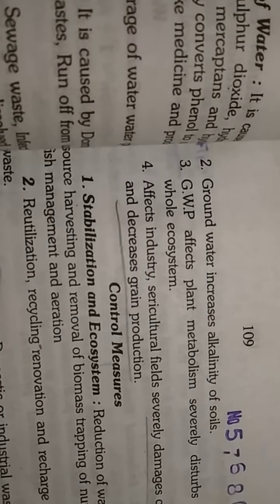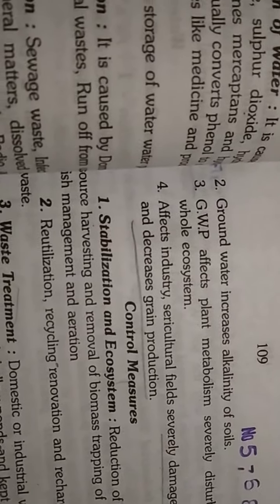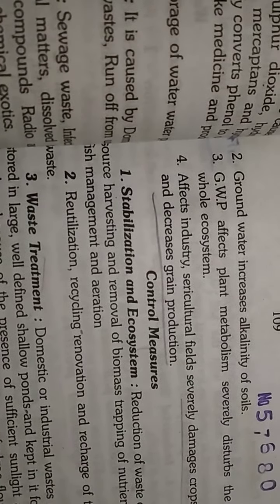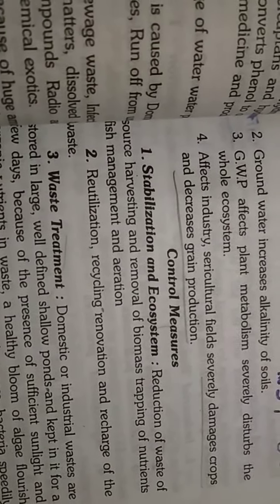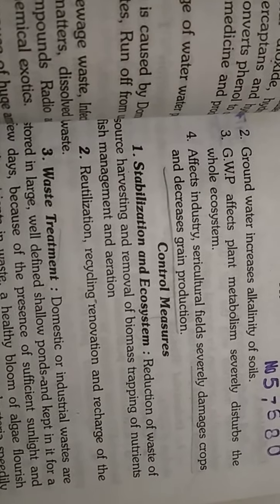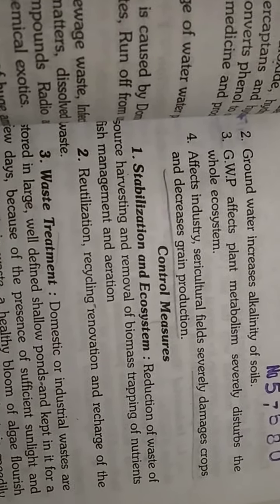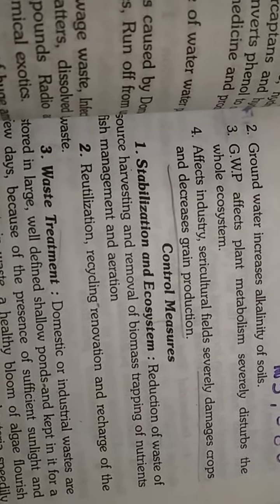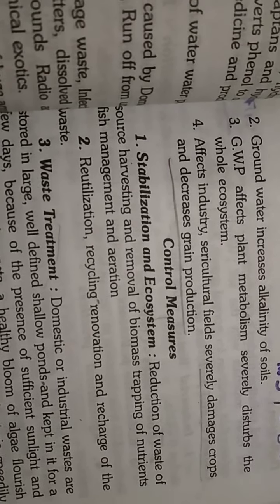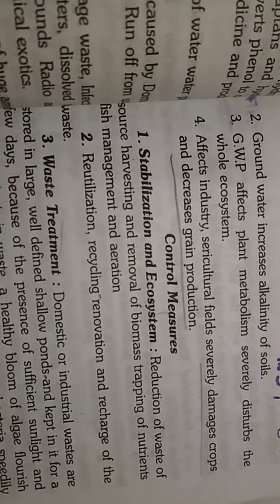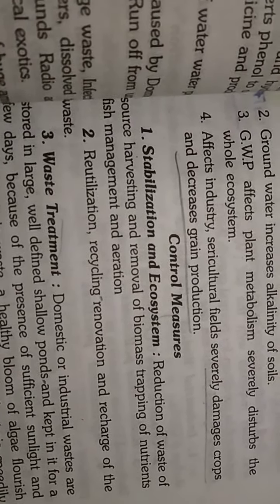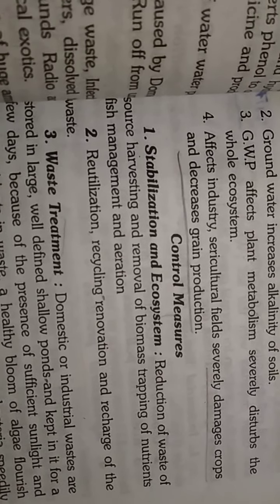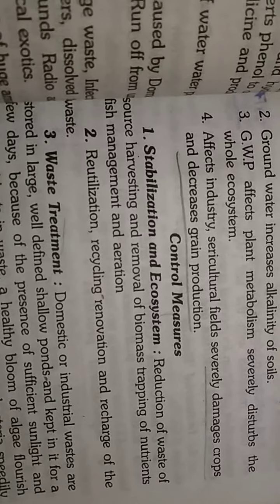Now we will look at control measures for water pollution. Corporations and municipalities treat the water supplied to city residents. This involves reduction of waste — removing all waste from the water — as well as removal of biomass.